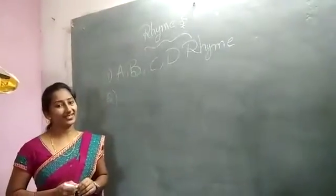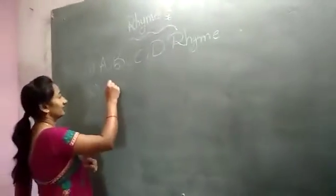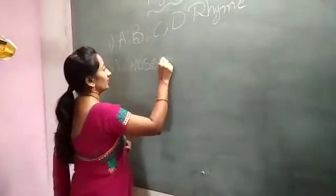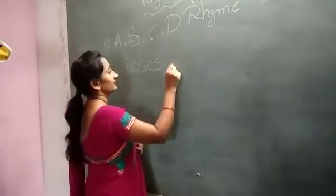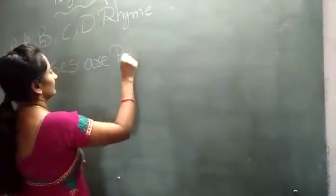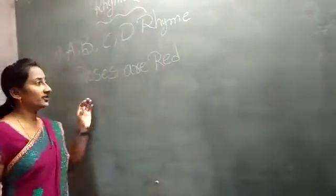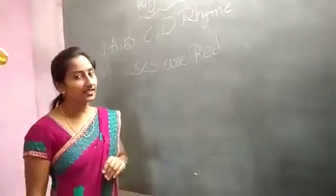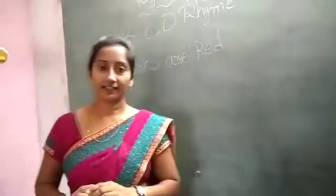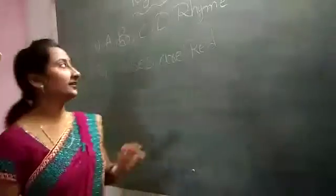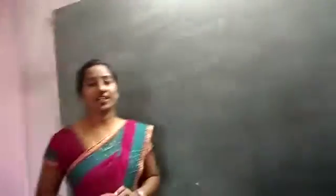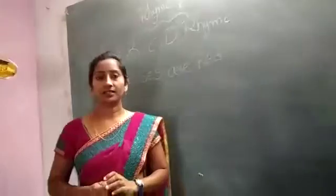The second rhyme is 'Roses are red.' What is that rhyme? Tell me the right name. Roses are red — and also A, B, C, D rhyme, alphabetical style. Okay, are you ready, children? Stand up.